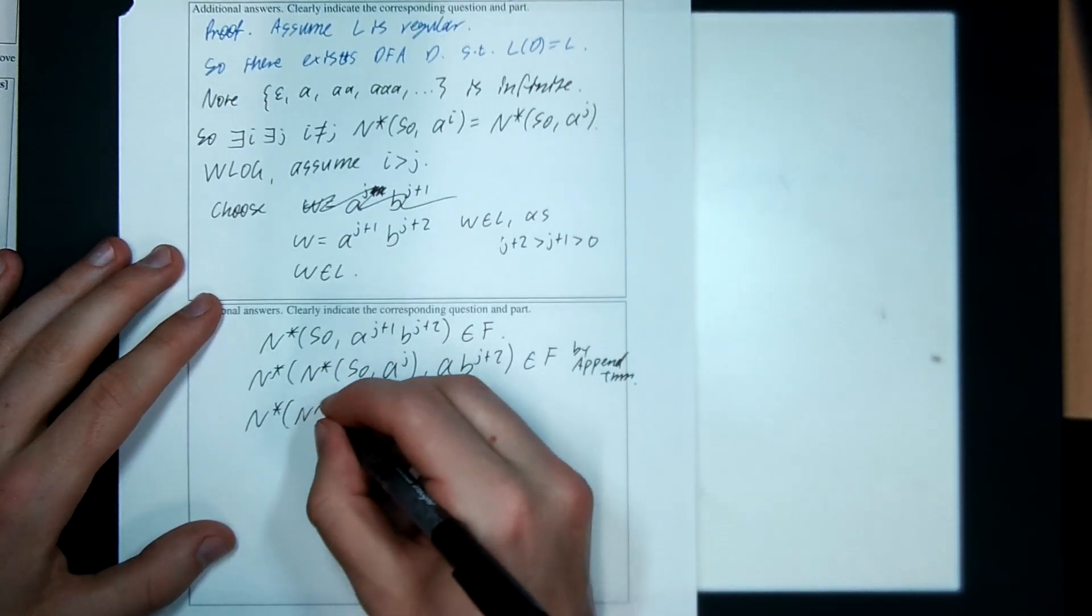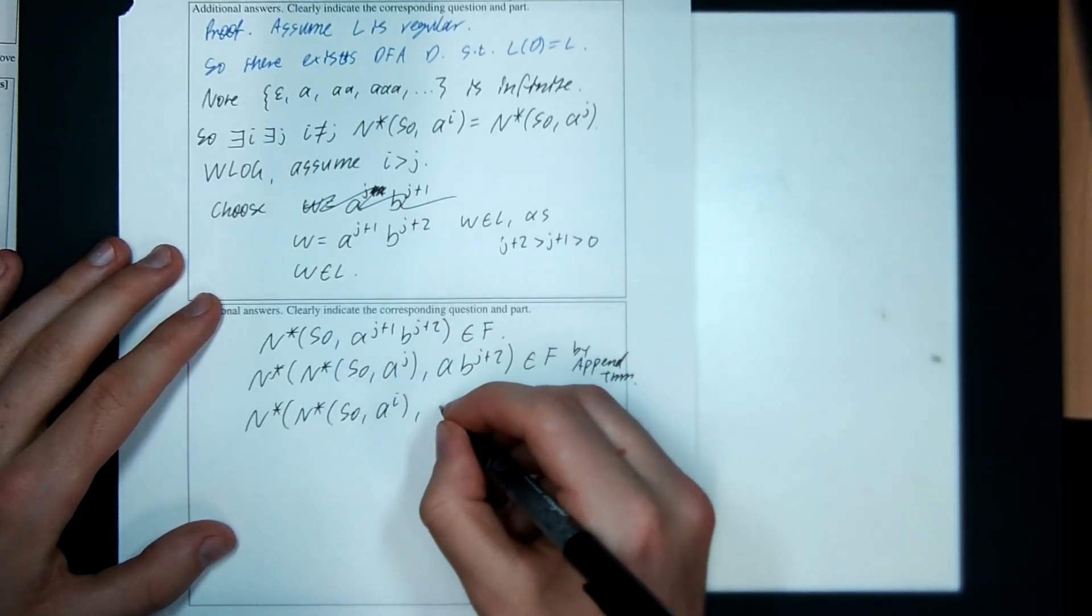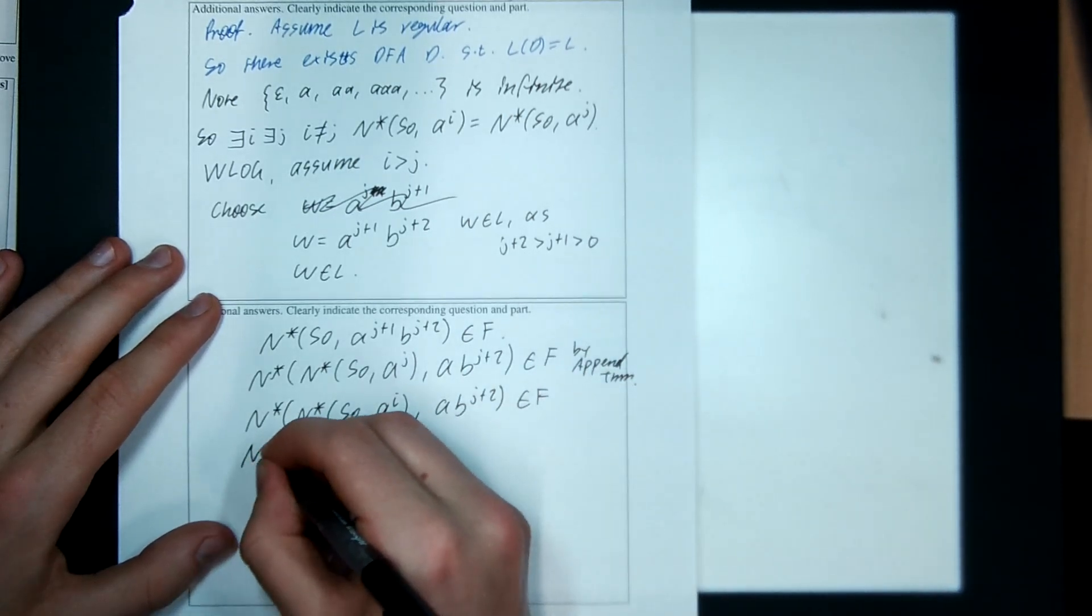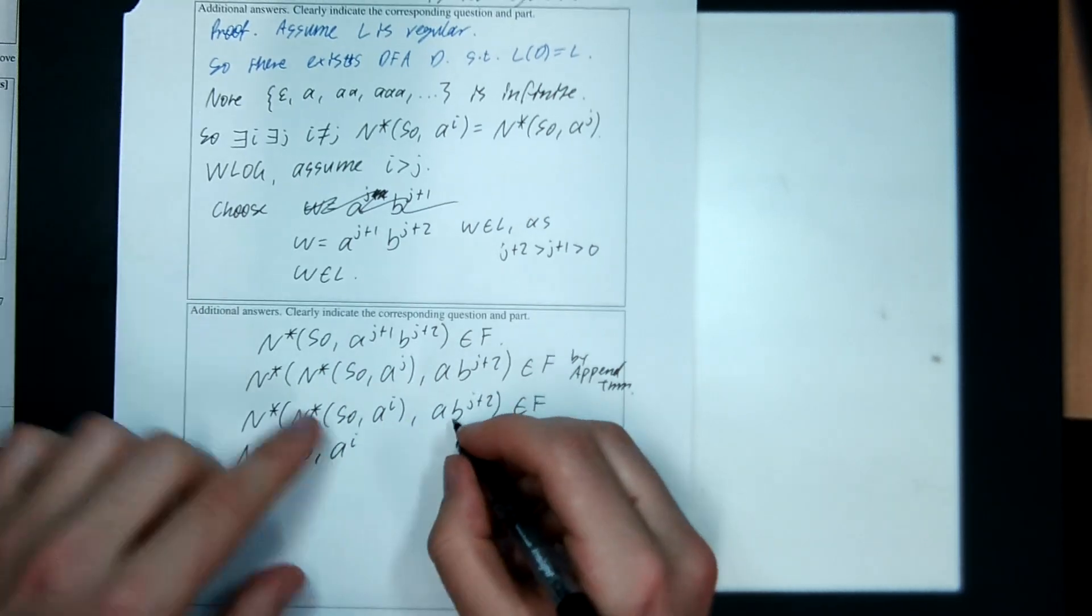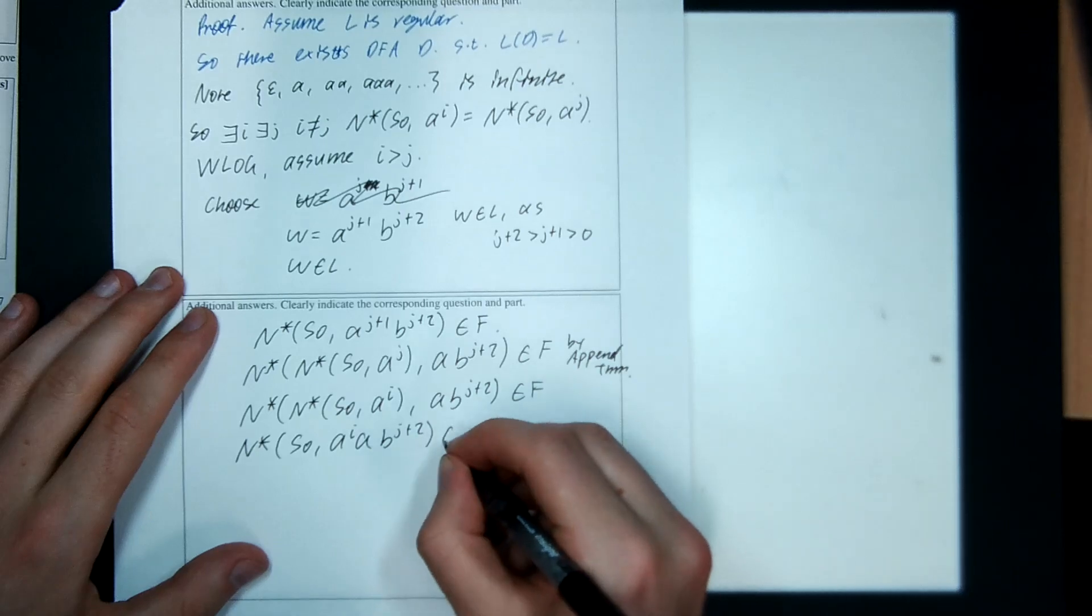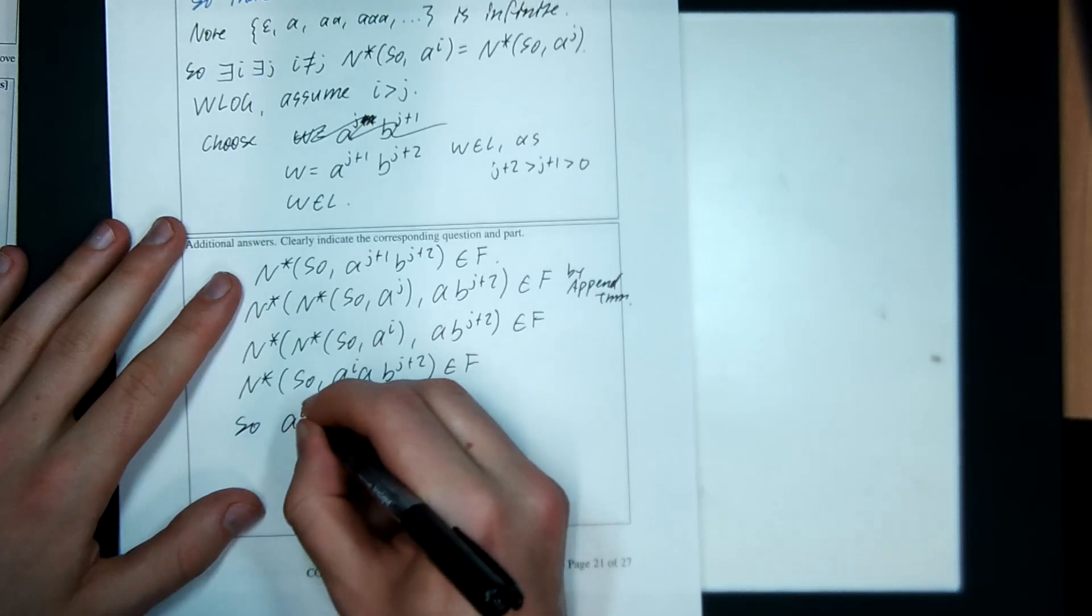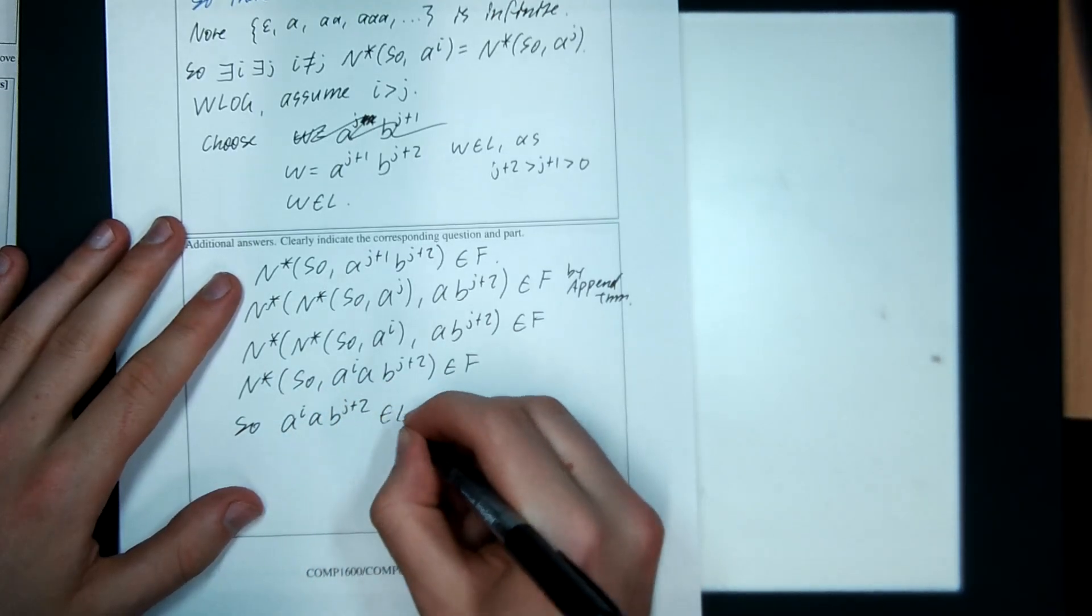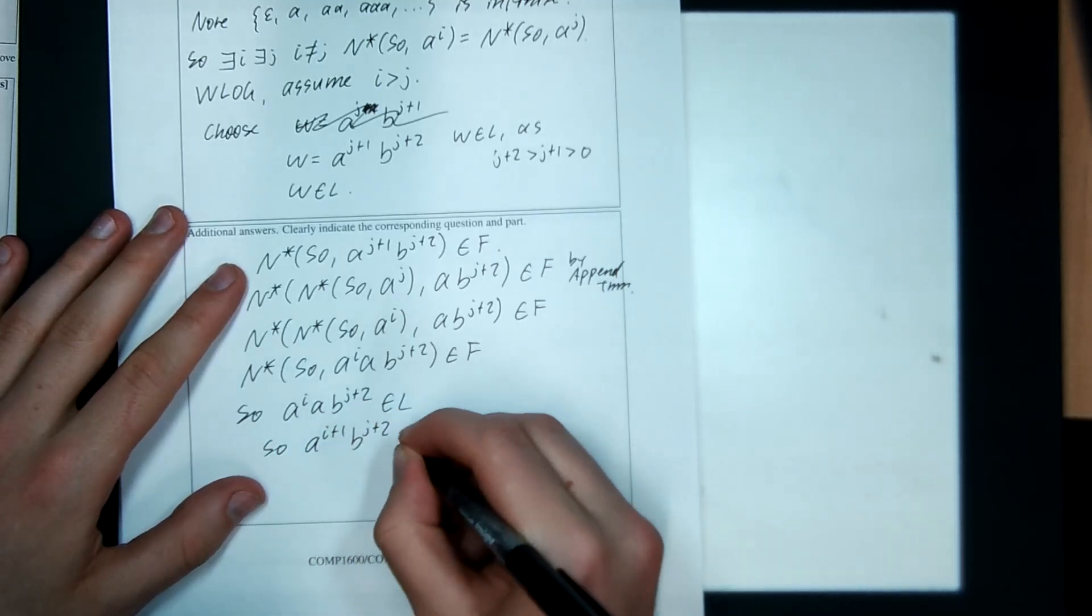I'm still in a final state. And then I can use this little property up here to hot swap J many A's for I many A's. So let's do that. Whoopsies. By append theorem. N star, N star, S zero, A to the I, A B to the J plus 2. Still a final state. And then do append theorem backwards. A to the I, A, B to the J plus 2. That goes to the final state. So A to the I, A, B to the J plus 2 is in the language. So A to the I plus 1, B to the J plus 2 is in the language.